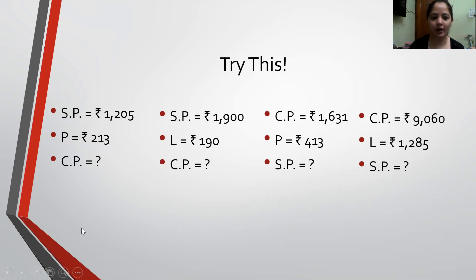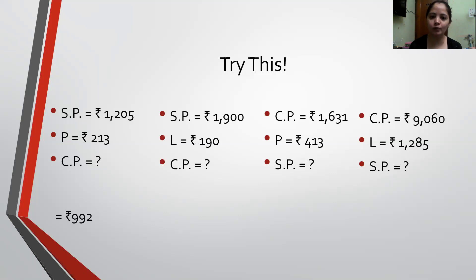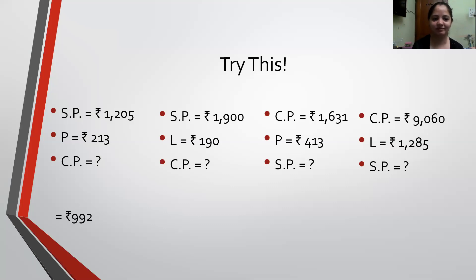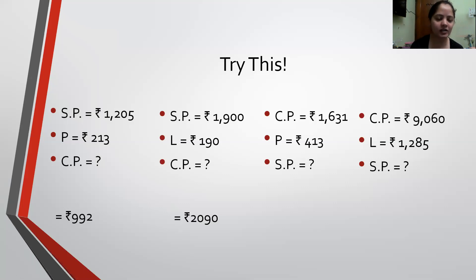Let's check the answers. The answer to the first one is Rs. 992. If you are getting the same answer, you can put a tick on your solving. For the second part — Cost Price equals Selling Price plus Loss — the answer is Rs. 2,090. You need to add the loss.